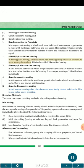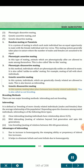Phenotypic assortive mating: in this type of mating, animals which are phenotypically alike are allowed to mate among themselves. This is also called like-to-like mating. Phenotypic disassortive mating: in this method, individuals which are phenotypically unlike are allowed to mate. It is also called unlike-to-unlike mating — for example, mating of tall with short individuals. Genetic assortive mating: individuals which are genetically closely related are allowed to mate. This is also known as inbreeding. Genetic disassortive mating: mating takes place between less closely related individuals. This is also called outbreeding.